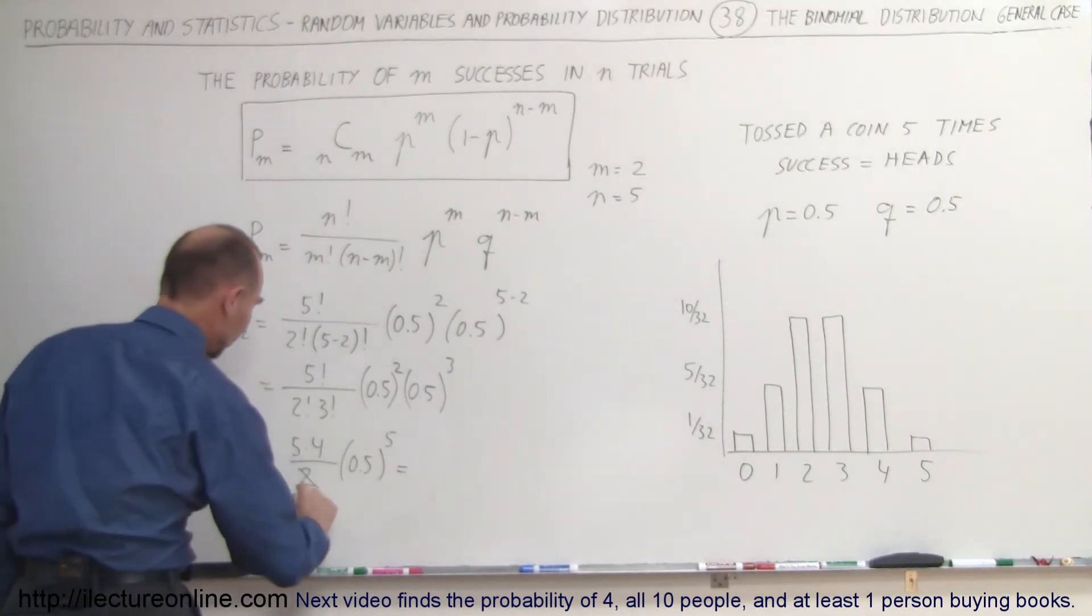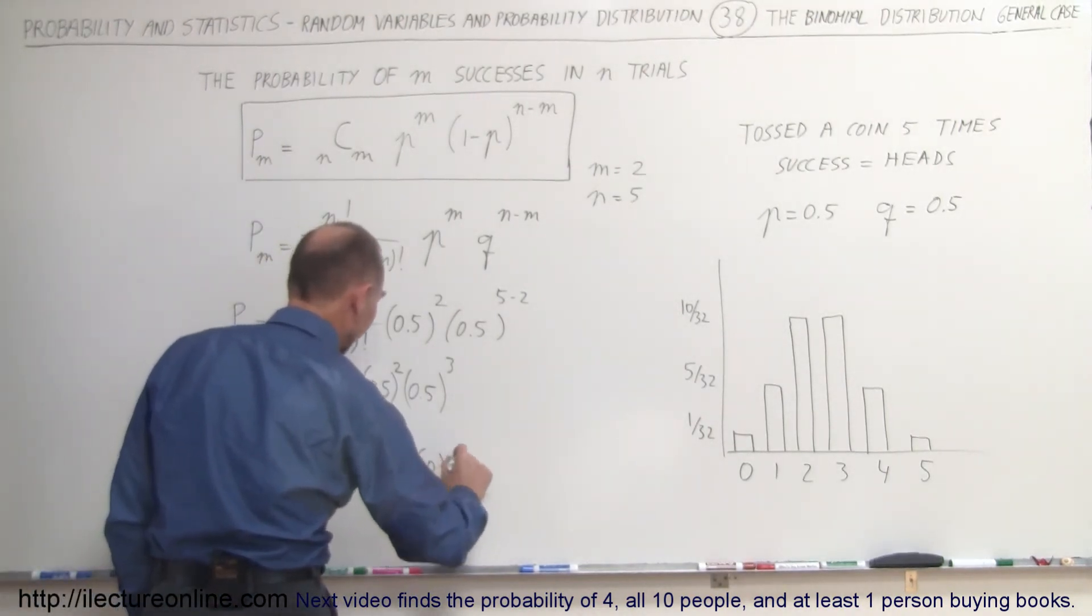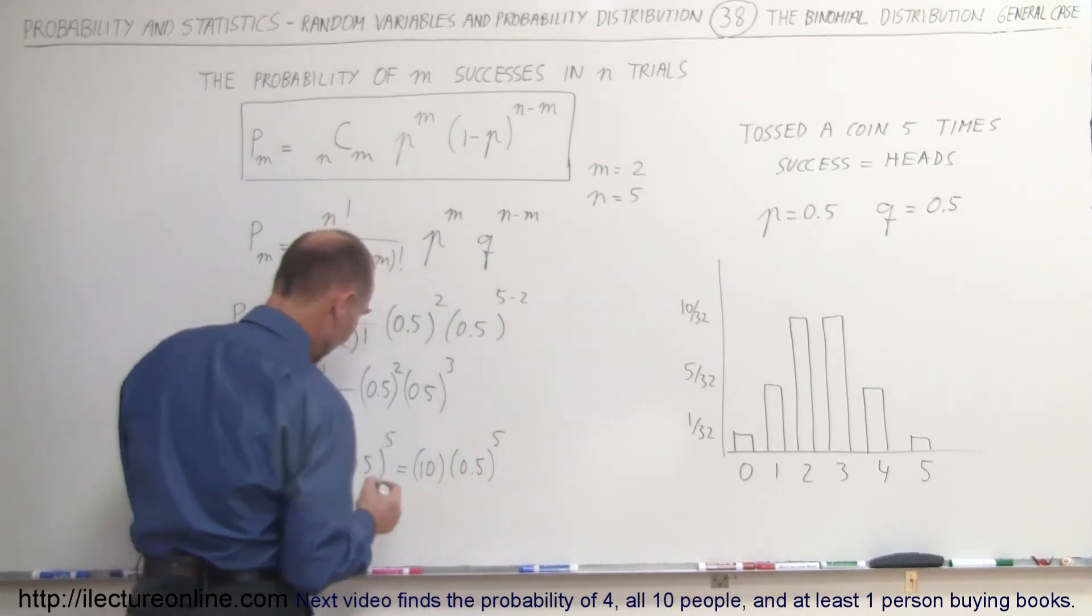This cancelled down to one and this is two, so we get 10 times 0.5 to the fifth power.